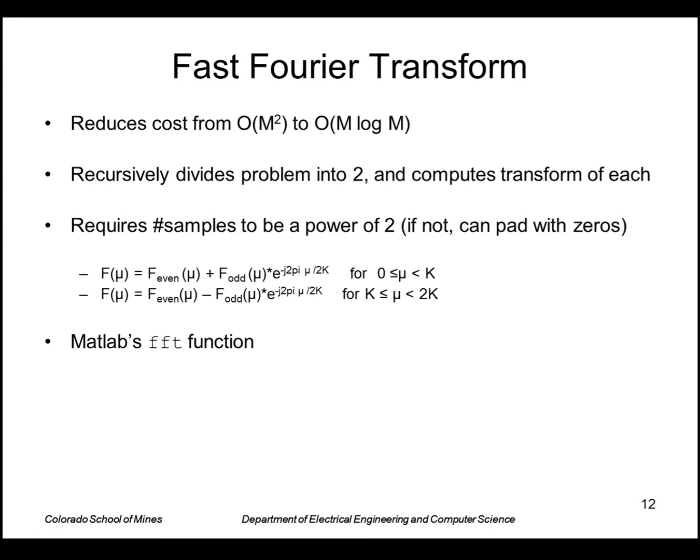That transform is actually kind of expensive because it has two nested loops. So this is a faster way to do it. It's an algorithm called the fast Fourier transform. I won't really cover it except to say it's the standard way of doing Fourier transform.